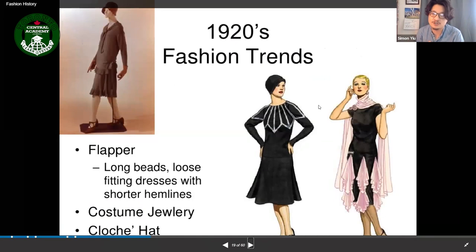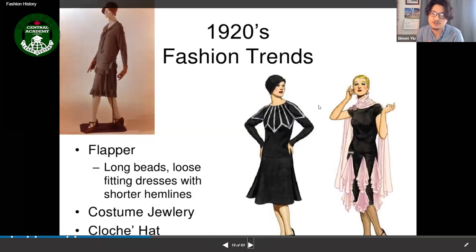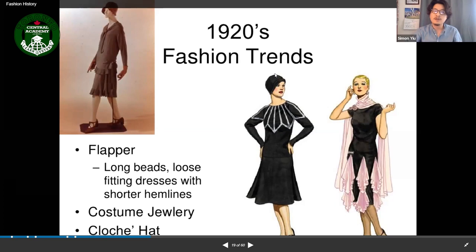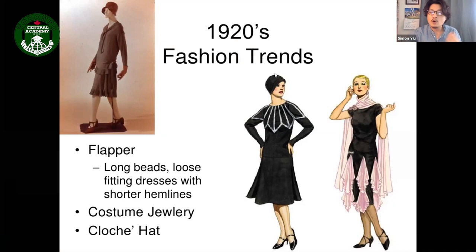The 1920s fashion trends included the flapper look: long beads, loose-fitting dresses with shorter hemlines. From the 1910s to the 1920s, hemlines rose from the feet toward the knee. Flappers also wore costume jewelry and cloche hats, which are still popular today and can be purchased or handmade.